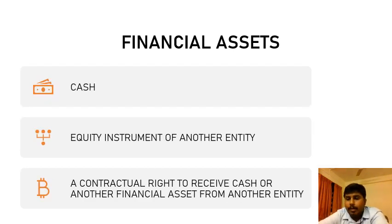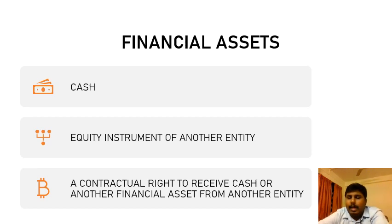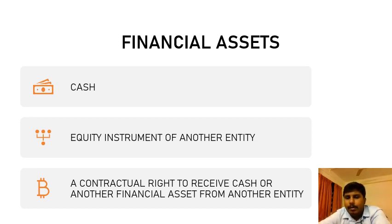To recap: a financial instrument is any contract that gives rise to a financial asset in the books of one entity and a corresponding financial liability or equity in the books of another entity. First, we covered what is a contract. Now let's decode what we mean by a financial asset. Unlike the definition of contract, the definition of financial asset is set out as an inclusive list — they have given four or five items which are covered under financial assets.